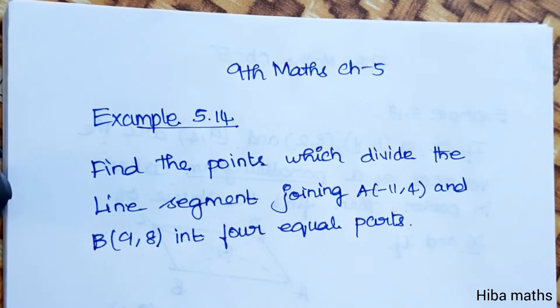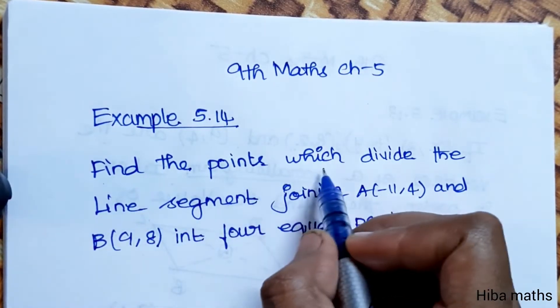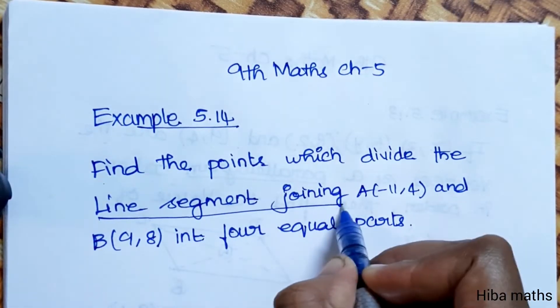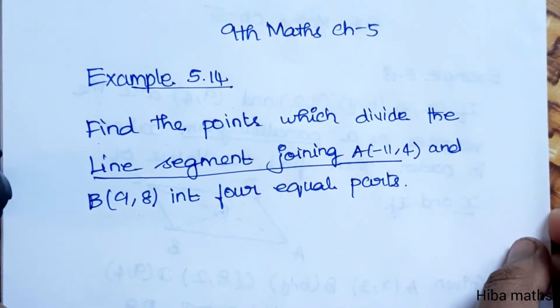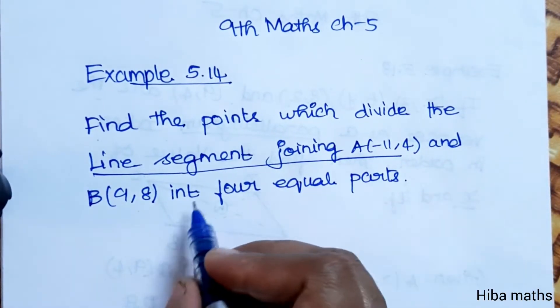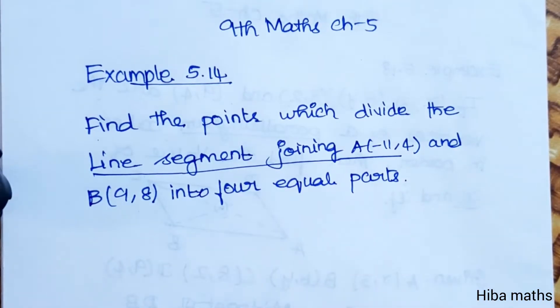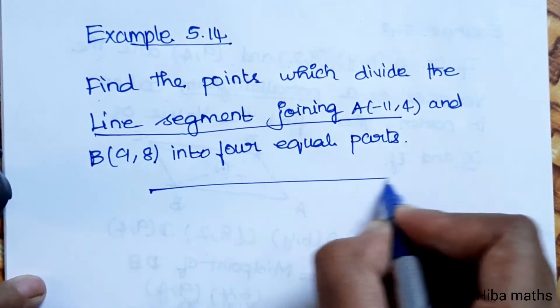Hello students, welcome to Hiba Maths, 9th standard maths, Chapter 5, Example 5.14. Find the points which divide the line segment joining A(-11, 4) and B(9, 8) into 4 equal parts. What I am saying is that AB is one line.